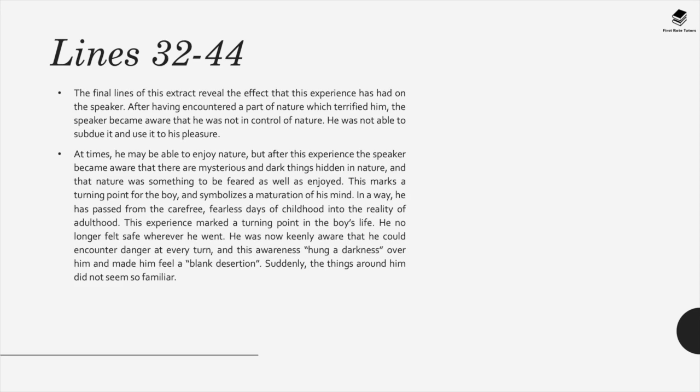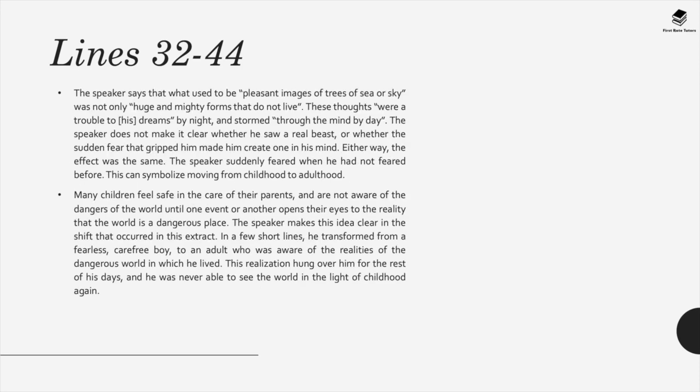In lines 32–44, the speaker reflects on the effect of this experience. Having encountered this dark side of nature, he realises he is not in control and couldn't subdue it. This continues to haunt him — symbolising his removal from innocence into experience. Where he once saw pleasant images of trees and sky, he now sees 'huge and mighty forms that do not live,' and these thoughts were 'a trouble to his dreams by night.' He suddenly fears what he had not feared before, symbolising the move from childhood to adulthood.